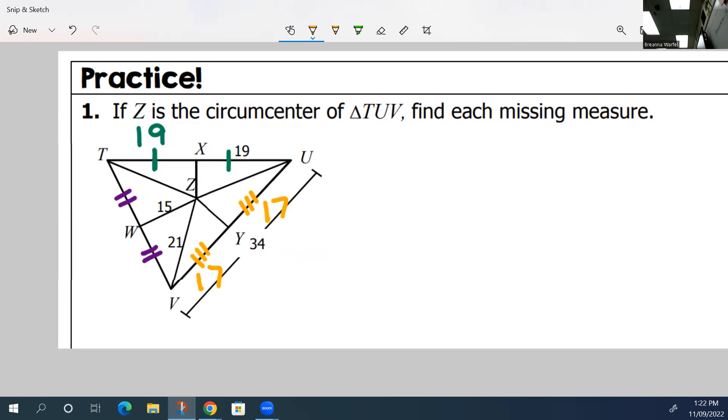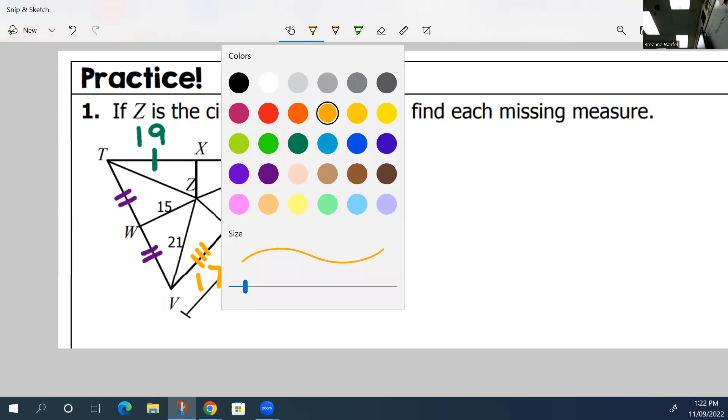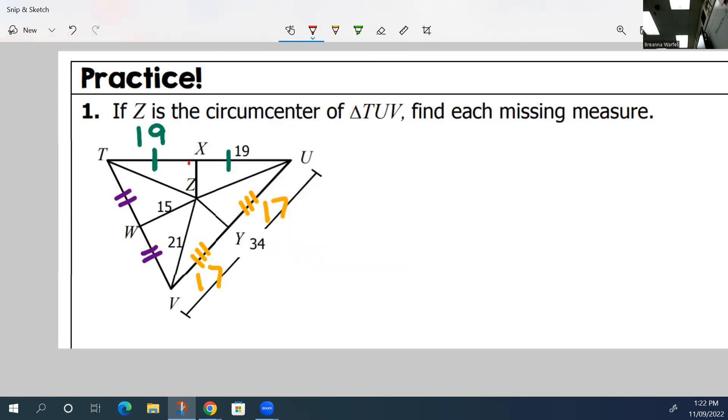Then we have to add some more information. Because they are perpendicular bisectors, we know that each of these perpendicular bisectors are actually right angles. And that's going to give us a little bit more information.